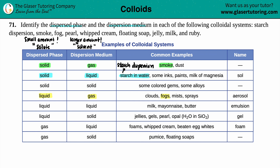The next one is pearl. Pearl is down here as a colloid. We see it as generally a solid, but there are small amounts of liquid in there. The dispersed phase is the liquid, which is placed into the larger solid — and that's what creates the pearl effect.